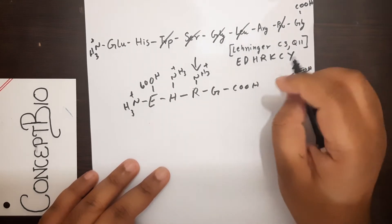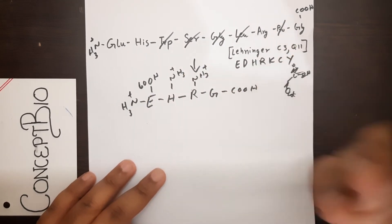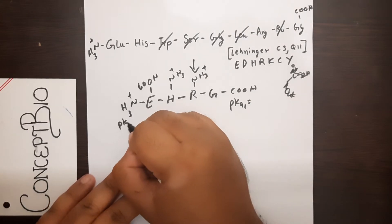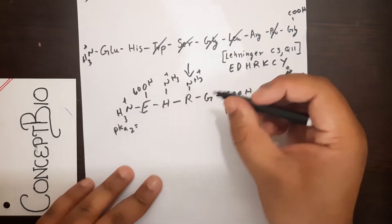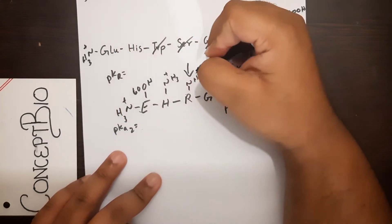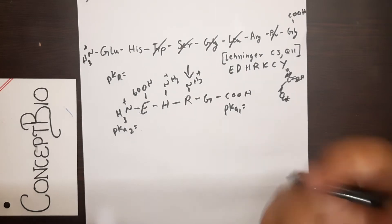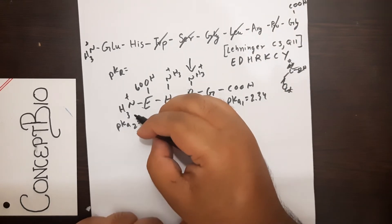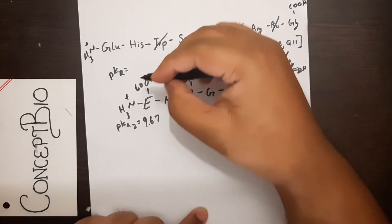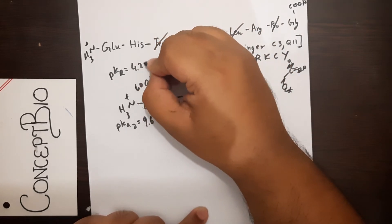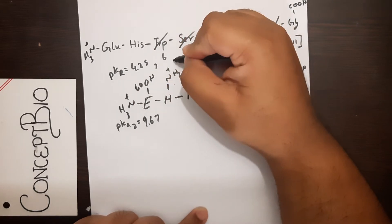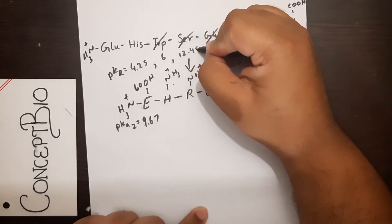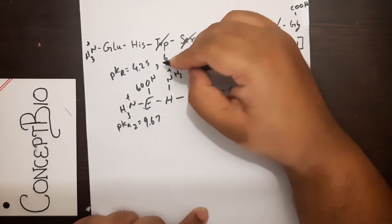Now we need the pKa values. From Lehninger, pKa1 is 2.34, pKa2 is 9.67 (terminal amino group). For the side chains: glutamic acid pKa is 4.25, histidine pKa is 6.0, and arginine pKa is 12.45.